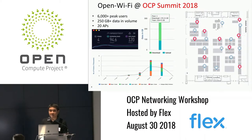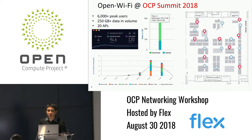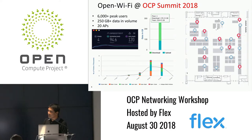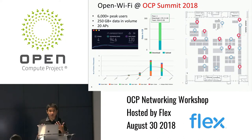As a recap — if you were at Summit, we talked about this — the group actually has a white paper they'll be publishing any day now about what happened with the Wi-Fi at OCP Summit. We actually had 20 different access points scattered throughout the hall. At peak, over 6,000 users — if you look at the graph at the bottom — and 250 gigs of volume. This was truly dogfooding at OCP, running disaggregated open Wi-Fi in production.